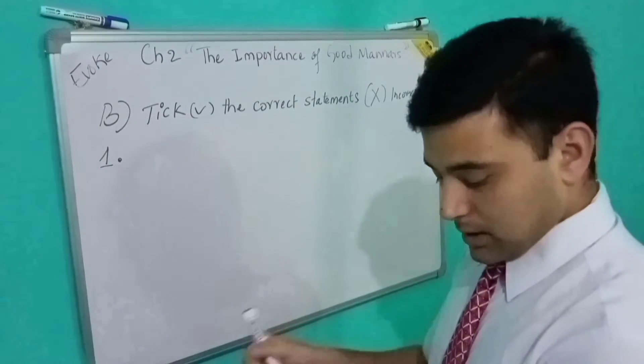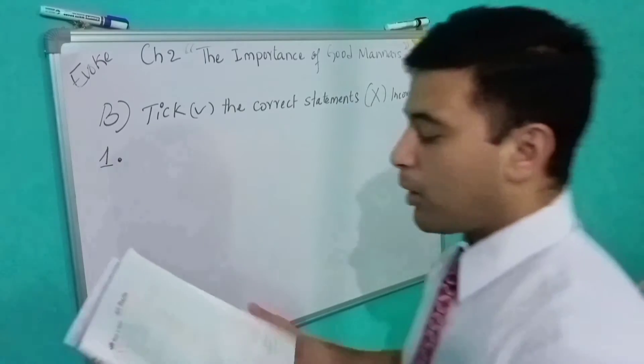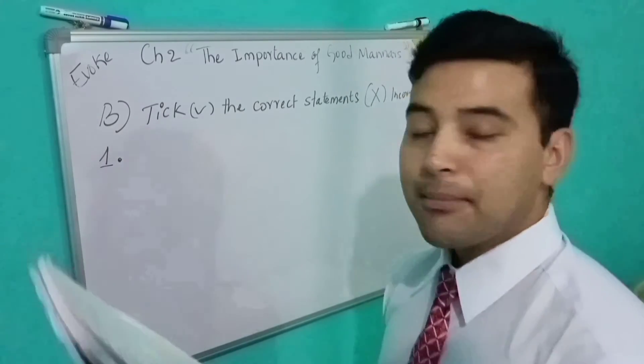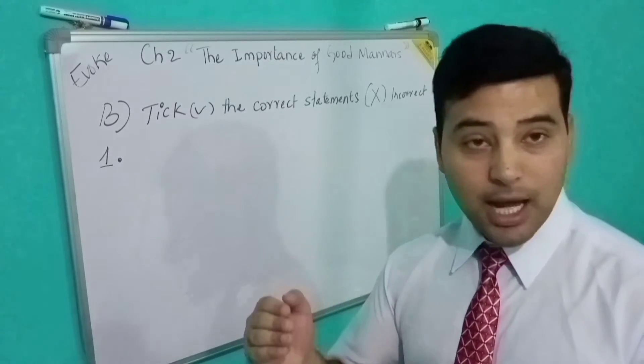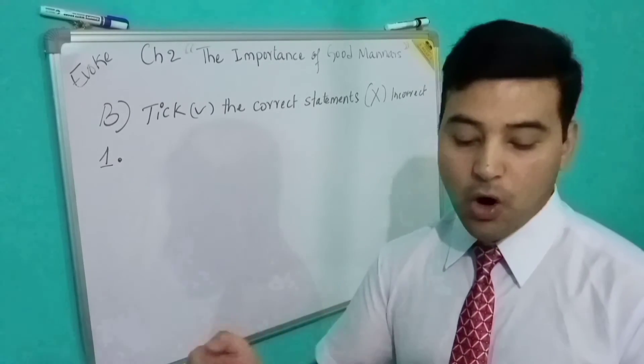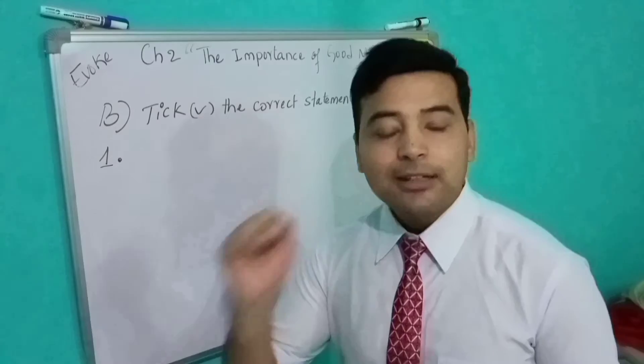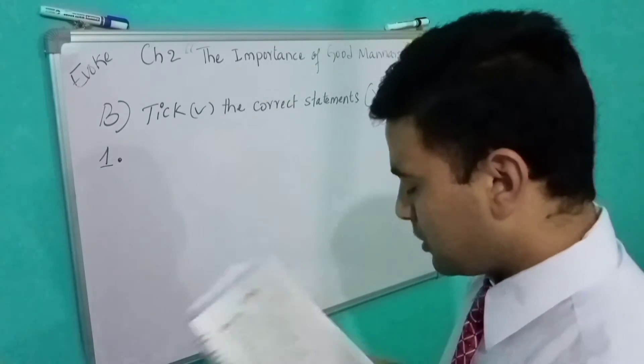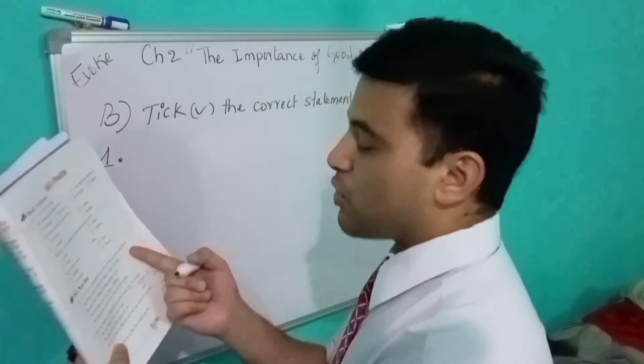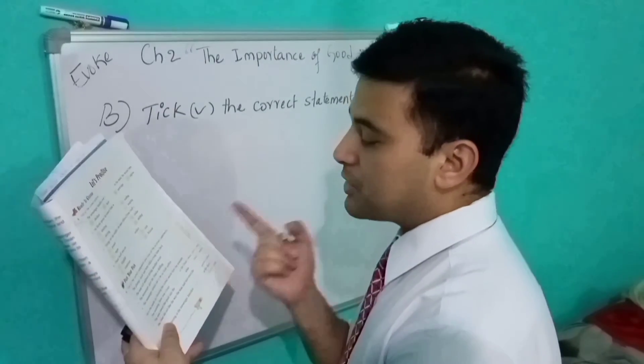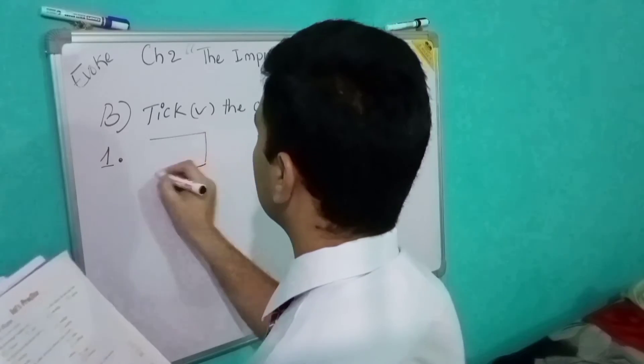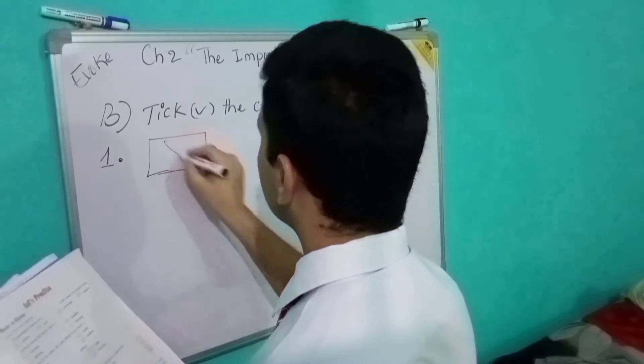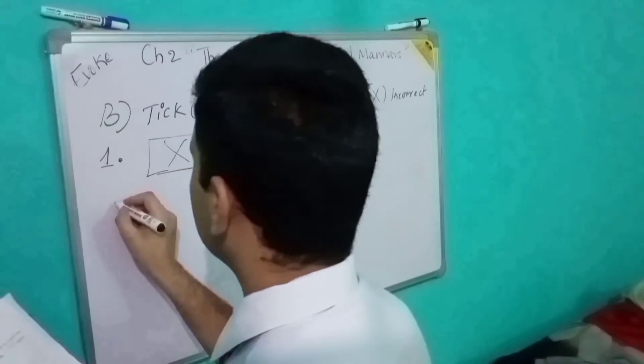Look at number one. The pompy dog had been killed a long time back. No, the pompy dog had been killed recently in the book. So this is wrong statement. You need to cross inside the box.